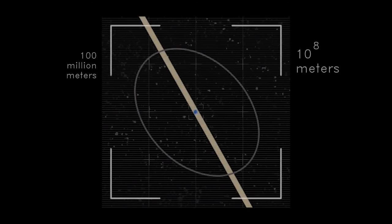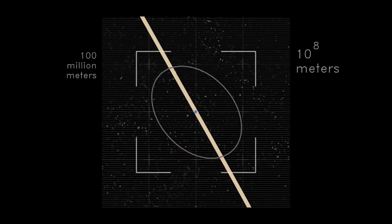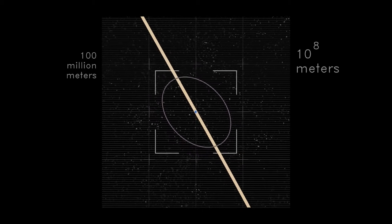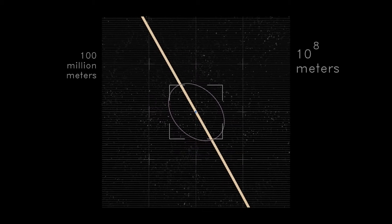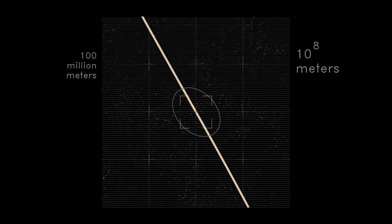This line represents the distance light travels in one second. Half of the Moon's tilted orbit. We can now see the arc of the Earth's orbit around the Sun.